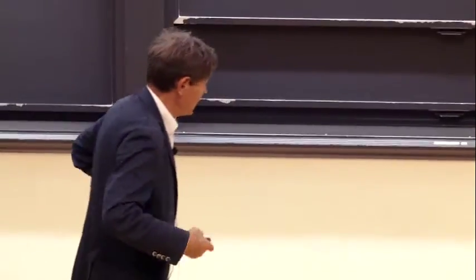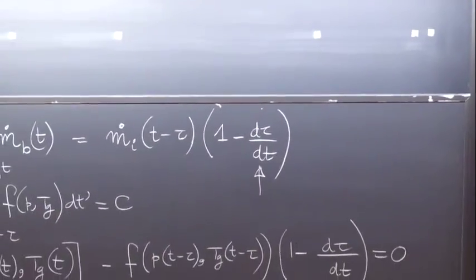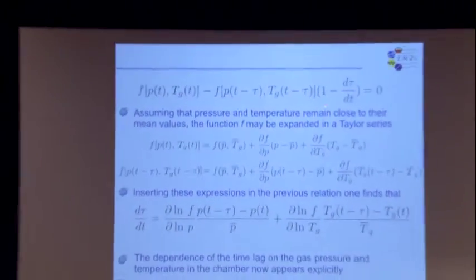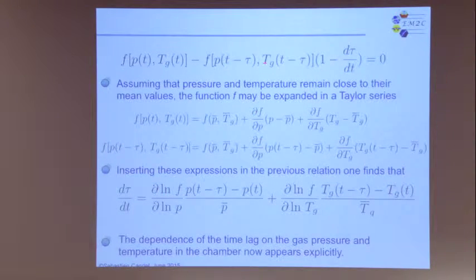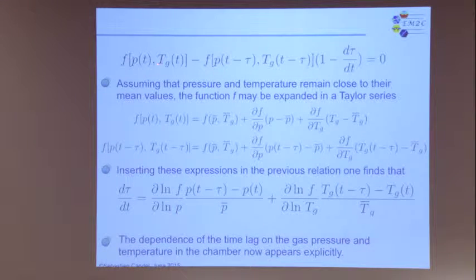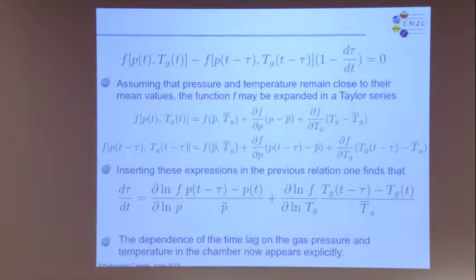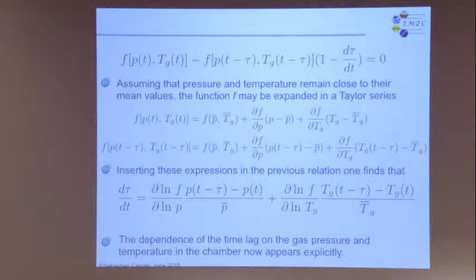This first equation is shown here. We consider that this is a small quantity, and also that τ is not very large — it's a delay, but not so large. So we can write that expression as a Taylor series, expanding with respect to pressure and temperature. When you put those expressions into the equation and neglect all second-order terms, you find dτ/dt very rapidly.